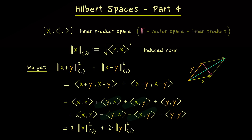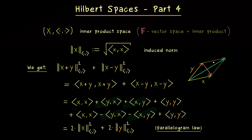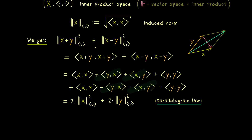With that we already have our result: the two squares added are given by two other squares added, just with a factor of 2. Exactly this is what we call the parallelogram law, and it holds for any inner product space, as you can see with this simple calculation. The name comes from the picture: in any parallelogram, the squares add up like that.